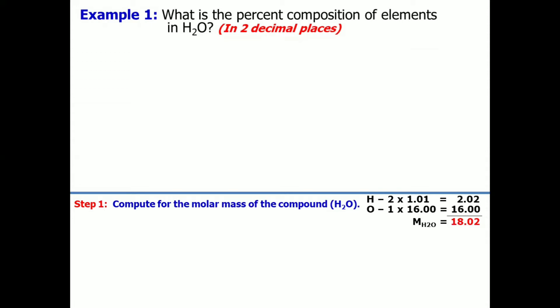After computing for the molar mass, let's proceed to step number 2. In here, we will apply now the formula for percent composition. And we will start with the hydrogen component. In this case, we will divide step number 2 in several parts. And part A will be write the number of atoms of the element present in the compound.